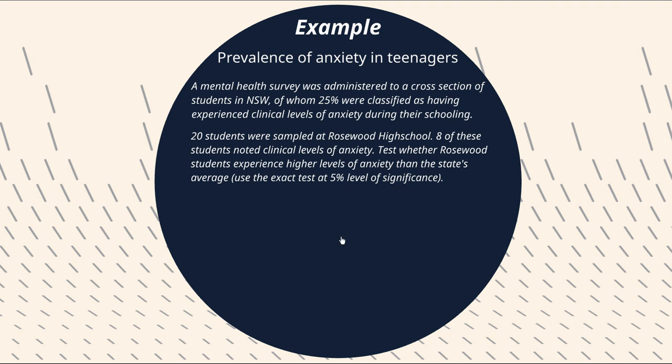So what that means is we're going to be using the binomial distribution that results from this without relying on a normal approximation. So let's find out how that plays out. So our null hypothesis is that theta, the true population proportion at Rosewood, is equal to 0.25 and the alternate hypothesis is that it's greater than 0.25.